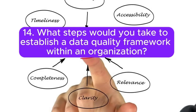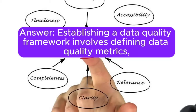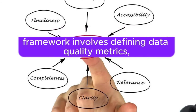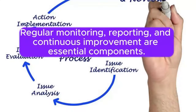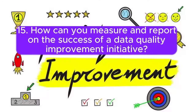14. What steps would you take to establish a data quality framework within an organization? Answer: Establishing a data quality framework involves defining data quality metrics, creating governance policies, implementing data quality tools, and providing training. Regular monitoring, reporting, and continuous improvement are essential components.